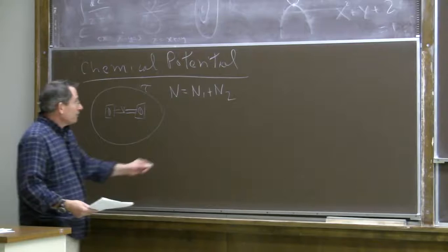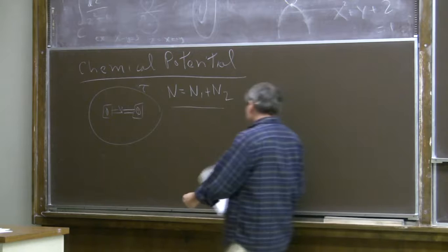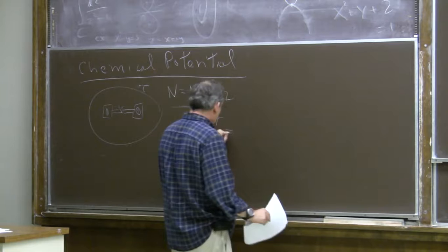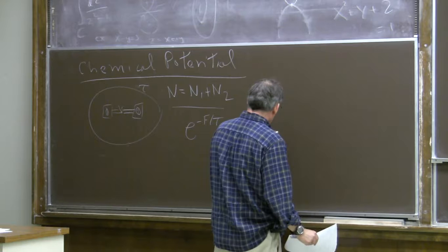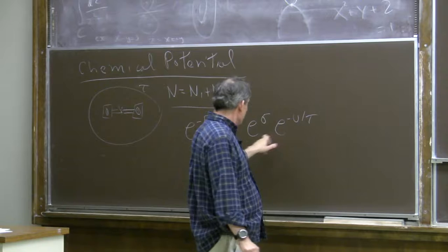Now, if we want to find the most probable configuration — the most probable way of sharing the particle number between the two systems when the temperature is fixed by the reservoir to be tau — then we should minimize the free energy. Remember, e to the minus free energy divided by tau is e to the sigma, the degeneracy; sigma is the entropy; e to the minus U over tau is the Boltzmann factor. If the system borrows energy U, it reduces the reservoir's degeneracy by this amount. This is the degeneracy of the system.